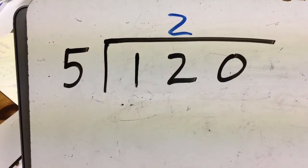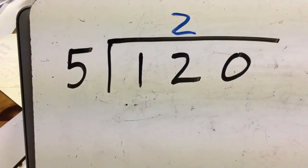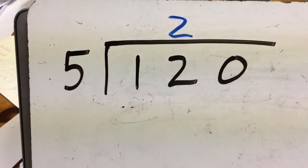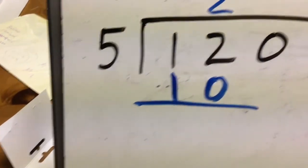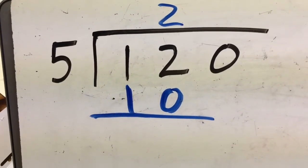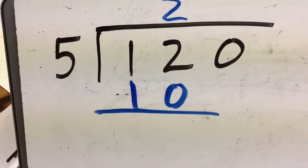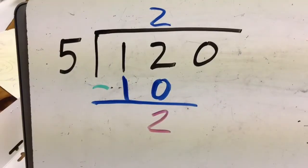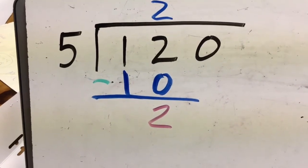I think there are two groups of five in twelve, so I write two up top over the two, because that's the number I'm thinking about dividing into the twelve. Two times five — I'm going to write that answer down under the twelve. Two times five is ten, so I put that under the twelve. Now I'm going to subtract ten from twelve to see what's left over. When I subtract two times five, which is ten, from twelve, I get two left over.